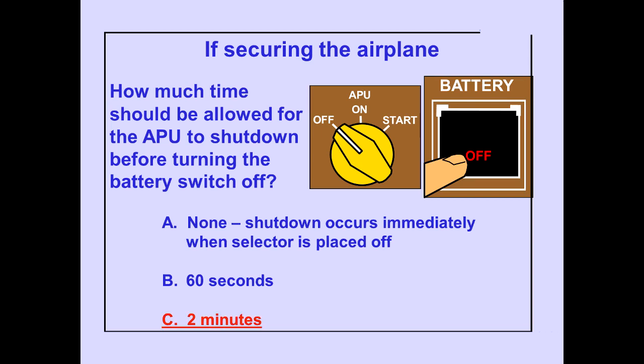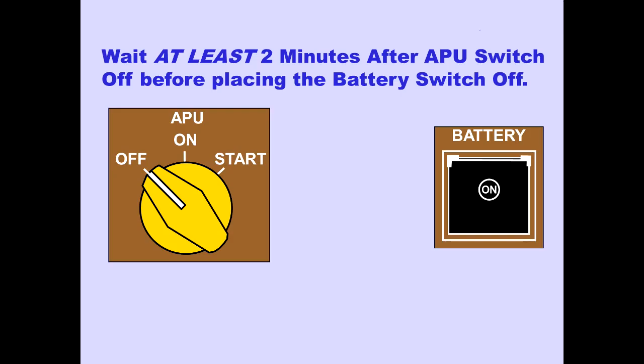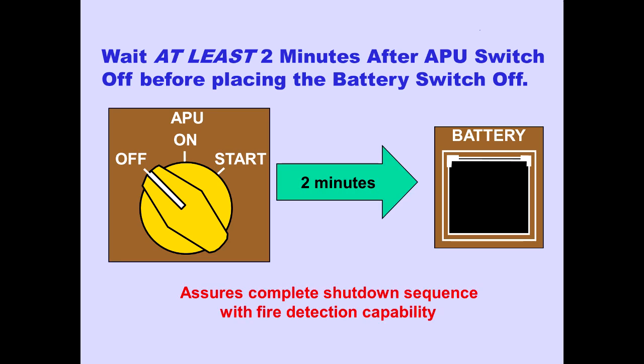Answer C is correct. Waiting at least two minutes allows the APU to complete the 60-second cool-down cycle and also provides fire detection capability until the APU has fully shut down.